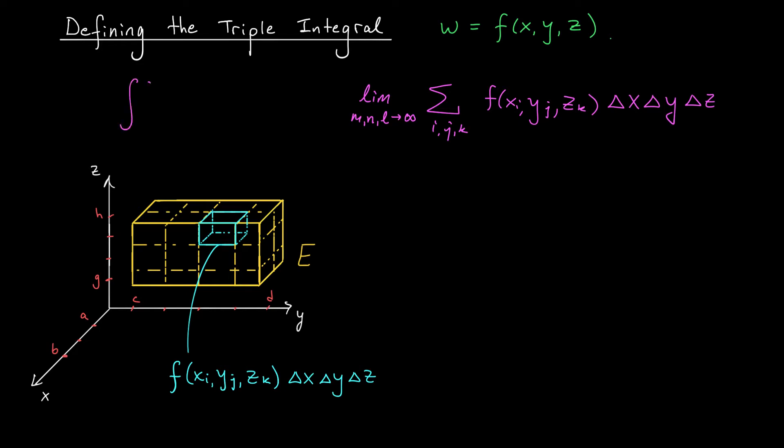I'll define the triple integral over this solid e of my function f of x, y, z. And instead of writing da, I'm going to write dv to represent a tiny change in volume. It will be this hideous limit.